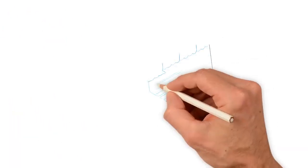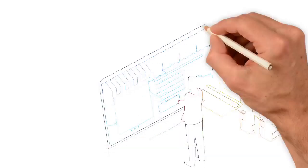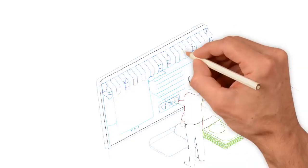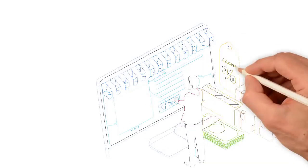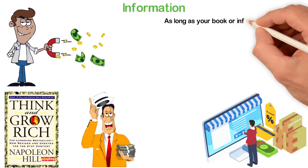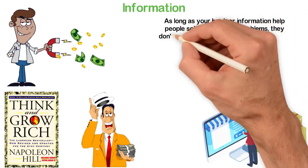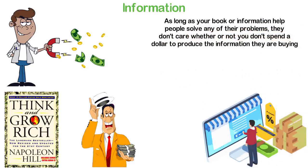For example, I have more than 5 books I've written and selling as you watch this video. Of all these 5 books, I only published one as a hard copy. In fact, I later discovered that people are willing to pay more for the soft copy of my books than for the hard copy. As long as your book or information helps people solve any of their problems, they don't care whether or not you spend a dollar to produce the information they are buying.